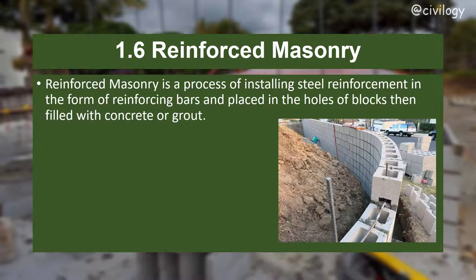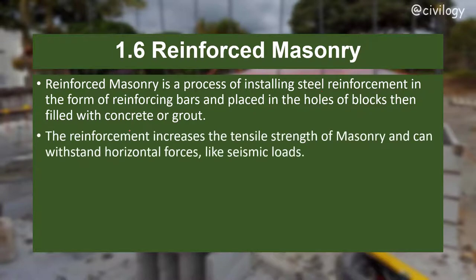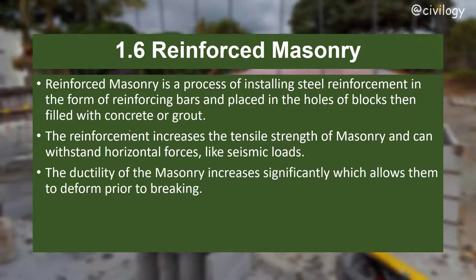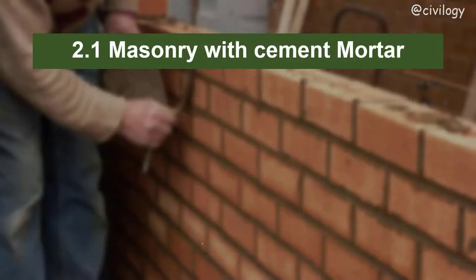Reinforced masonry involves installing steel reinforcing bars placed in the holes of blocks, which are then filled with concrete or grout. This reinforcement increases the tensile strength of the masonry and allows it to withstand horizontal forces such as seismic loads. The ductility increases significantly, allowing the masonry to deform prior to breaking. Reinforced masonry walls can be load-bearing or non-load-bearing.